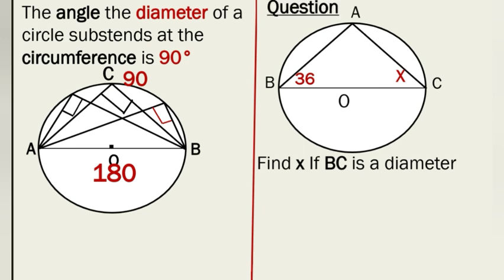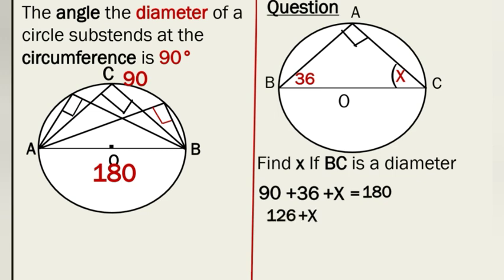The question says find X if BC is a diameter. Since BC is a diameter, the angle at A in this diagram will be 90 degrees per our rule. To find X, we sum the angle at A — 90 degrees — plus the angle at B — 36 degrees — plus X, and this equals 180 degrees (sum of angles in a triangle). So 90 plus 36 gives 126, plus X equals 180. Subtracting 126 from both sides, X equals 54 degrees.